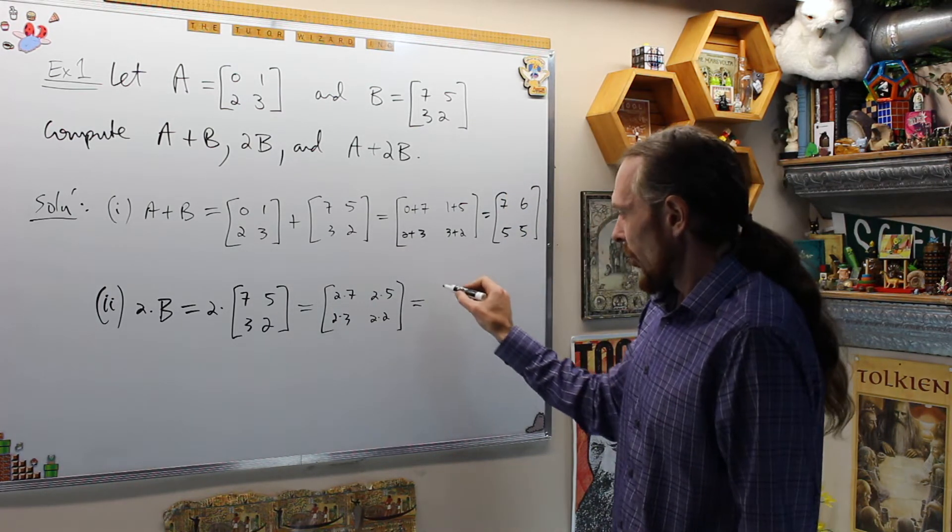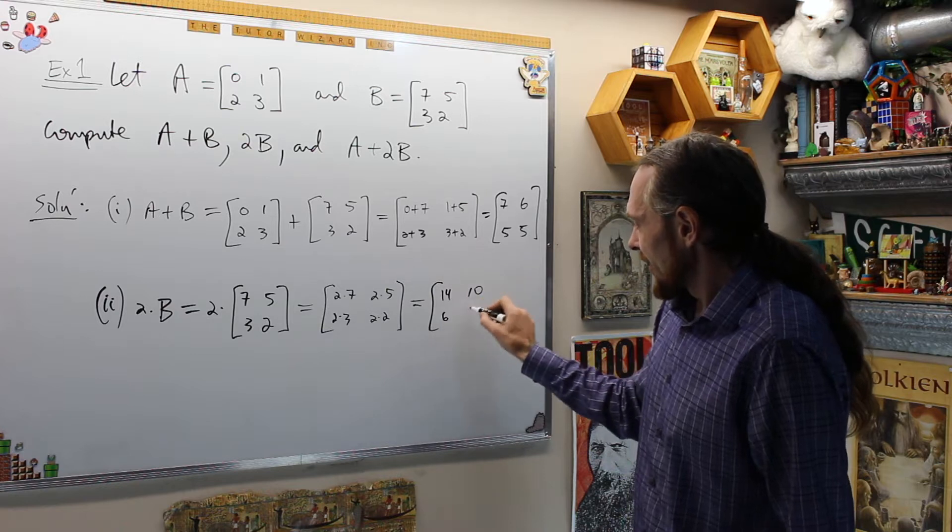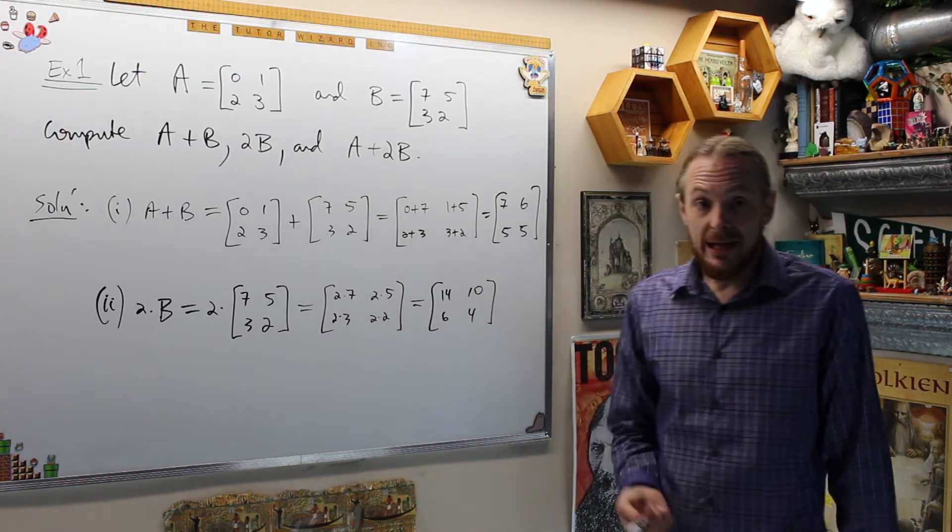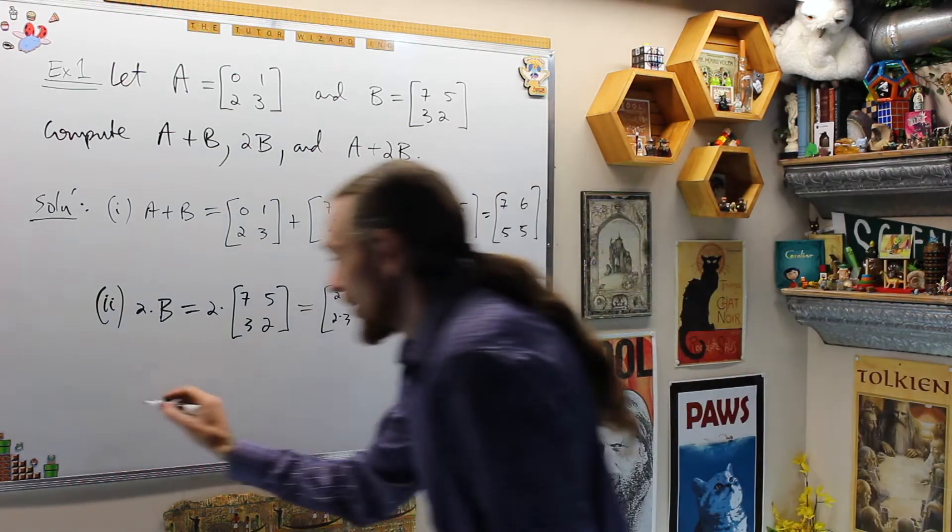2×2 is 4, 2×7 is 14, 10, 6, 4. This is how you double a matrix. And then how do we do this one step at a time?